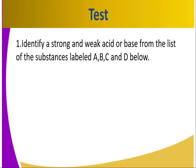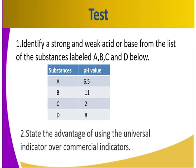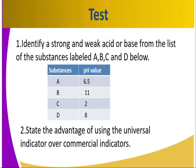Let's look at the test of this lesson. Identify a strong and weak acid or base from the following substances A, B, C, and D. Substance A has a pH value of 6.5; substance B has a pH value of 11; substance C has a pH value of 2; and substance D has a pH value of 8. Identify which is a strong or weak acid or base. Also, state the advantage of using the universal indicator over commercial indicators.